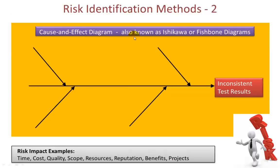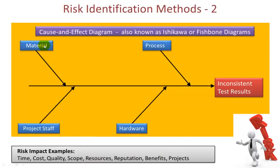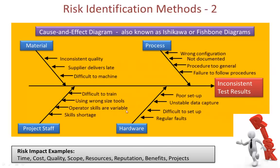Another technique is the cause and effect diagram, also known as Ishikawa or fishbone diagrams. The idea is that you take the area of uncertainty — in this case inconsistent test results, though it could be any other impact — and come up with key areas to consider: material, processes, project staff and hardware, as an example. You then brainstorm the areas which could result in uncovering risks that could lead to inconsistent test results. This is helpful because you can deal with each area in turn and decide how you might mitigate such problems.